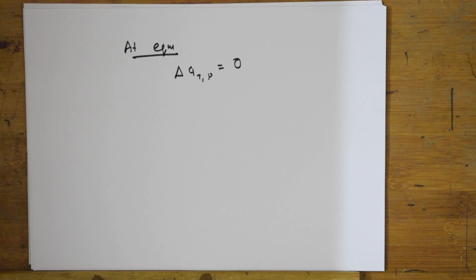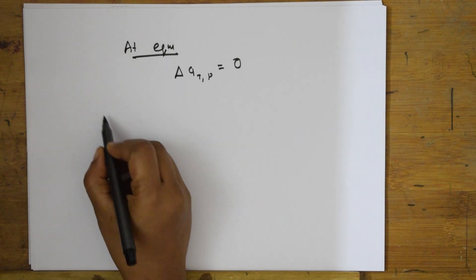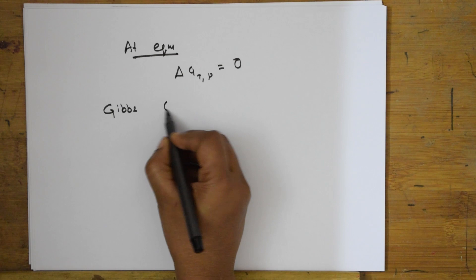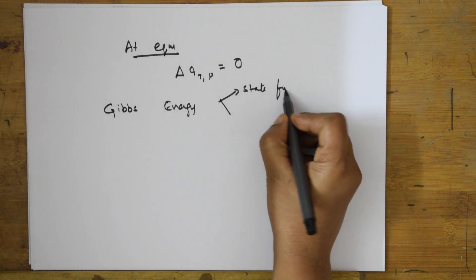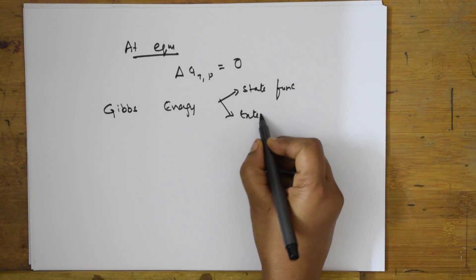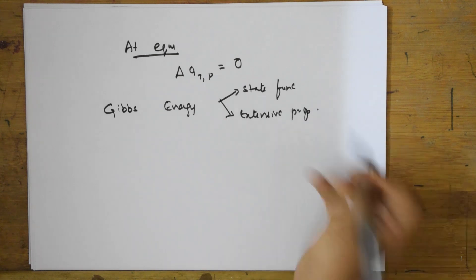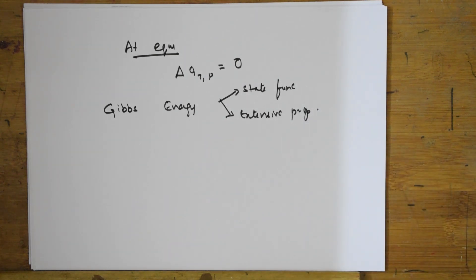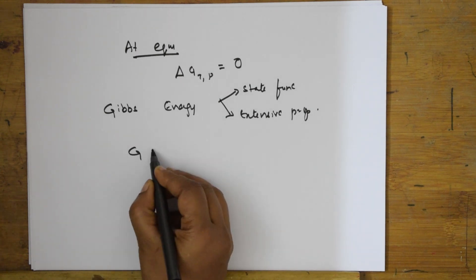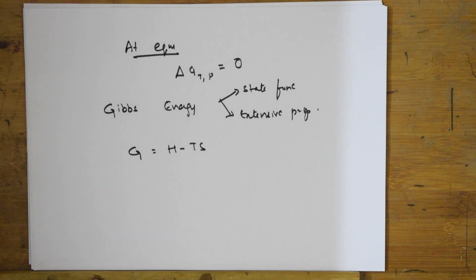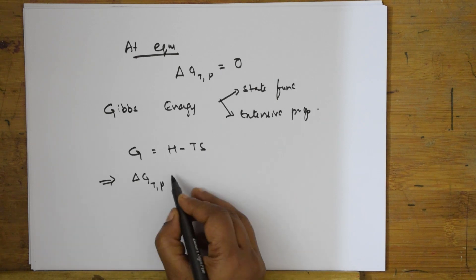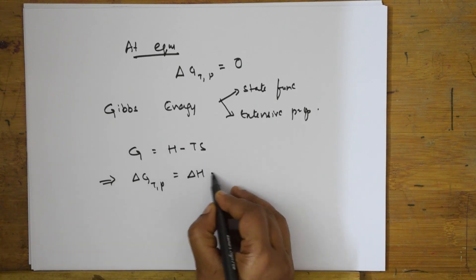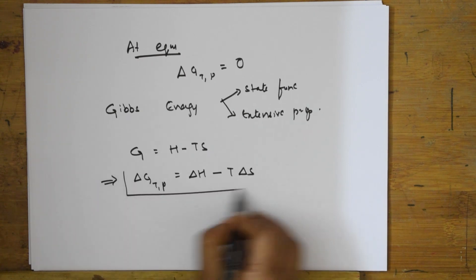Gibbs free energy is a state function and an extensive property — it depends on the initial and final state of the system. Remember, Gibbs energy is both a state function and an extensive property. The formula is: ΔG (at constant T and P) = ΔH - T·ΔS.